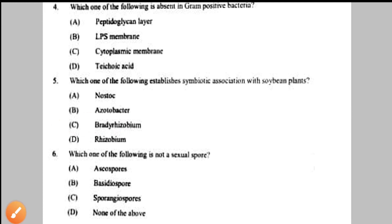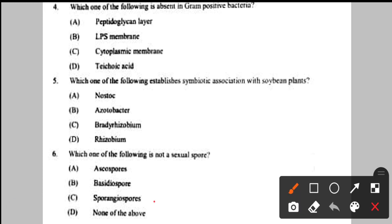Question number 6: which one of the following is not a sexual spore? Sexual spores include ascospores (specific to Ascomycetes) and basidiospores (specific to Basidiomycetes), produced in asci and basidia respectively. Sporangiophore is an asexual spore. The question asks which is NOT a sexual spore, meaning which is asexual — answer is option C, sporangiophore.